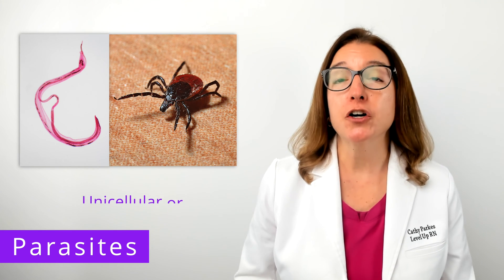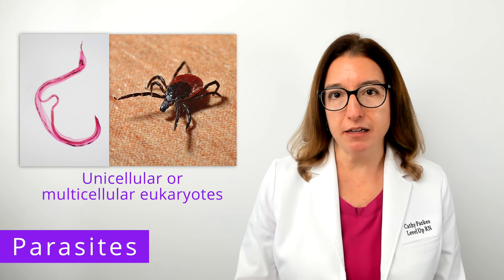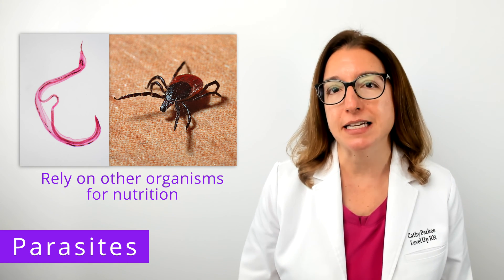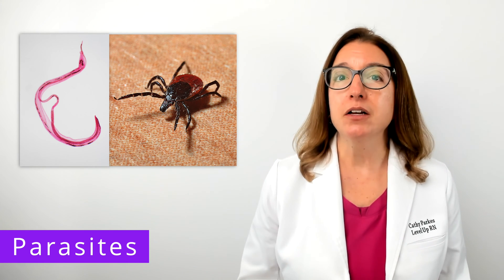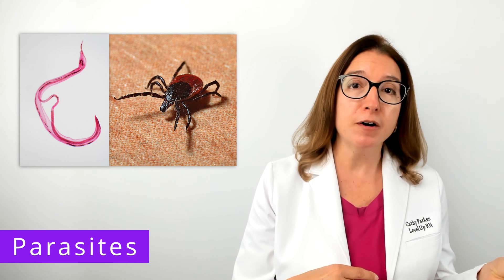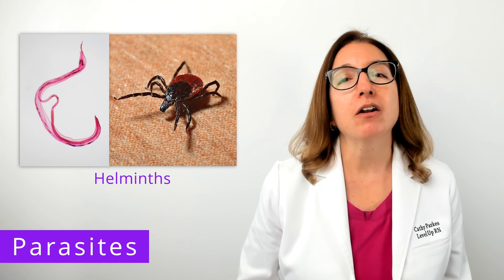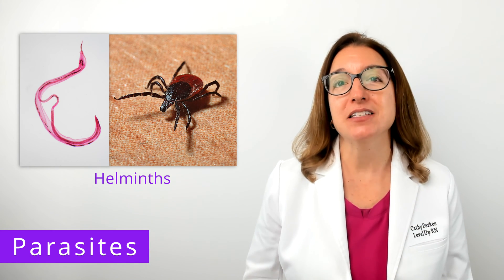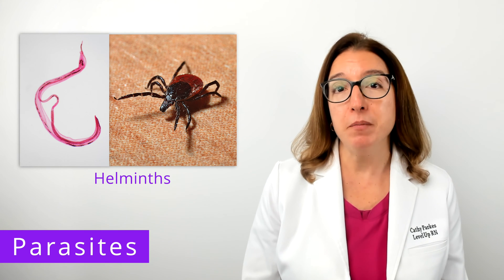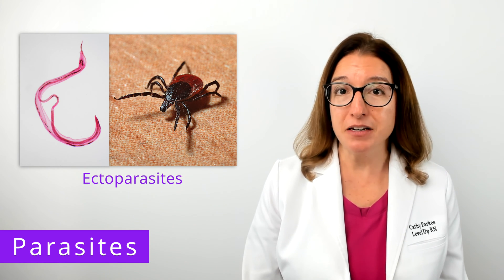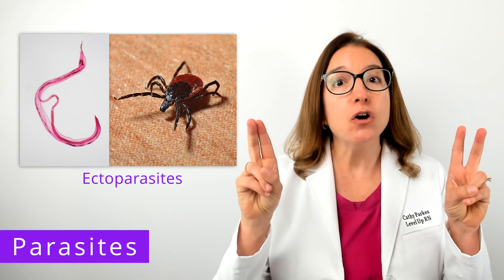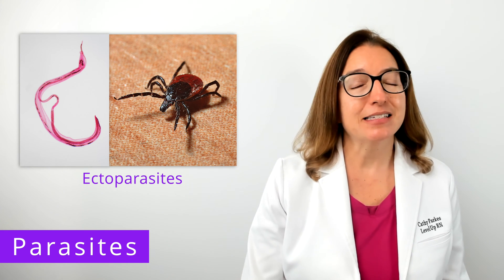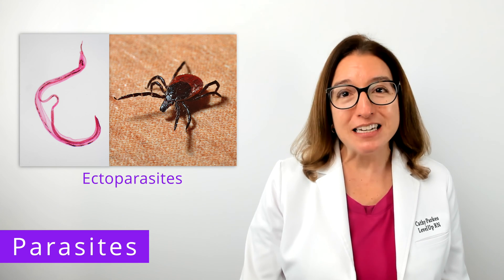Next, let's talk about parasites, which are eukaryotes that can be unicellular or multicellular. The most important thing to remember is that they rely on other organisms for their nutritional needs. The three main types of parasites that cause disease in humans include helminths, protozoa, and ectoparasites. Helminths are large, multicellular endoparasites — 'endo' means inside, so they live inside their hosts. Examples include roundworms and flatworms. Ectoparasites, on the other hand, live outside their hosts — 'ecto' means outside — and typically attach or burrow into the skin. Examples include ticks, fleas, lice, and mites.